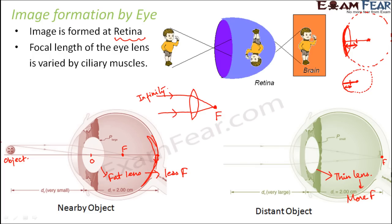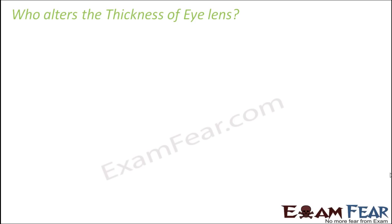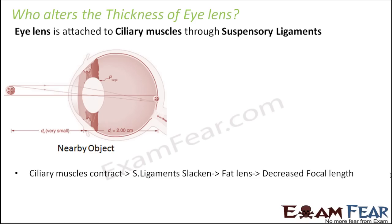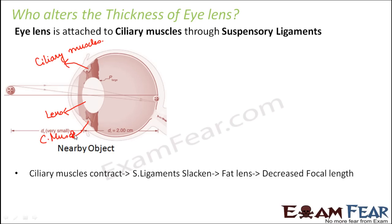Our next challenge is: who will take care of changing the thickness of the lens depending on the location of the object? Who alters the thickness of the eye lens? That is done by the ciliary muscles. If you look at the structure of the eye very closely, this is the lens, and the lens is connected to the ciliary muscles. You have the ciliary muscles on both ends of the lens. The ciliary muscles and the lens are connected via certain ligaments which are called suspensory ligaments. Here you have the ciliary muscles and these ligaments which connect to the lens, and similarly on the other side.